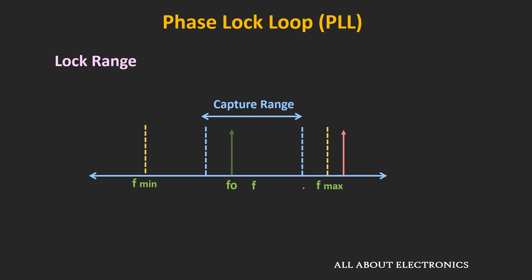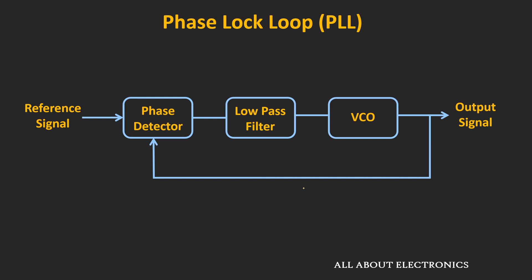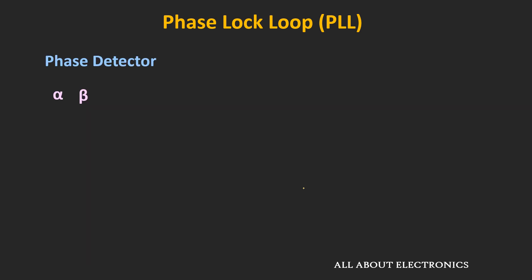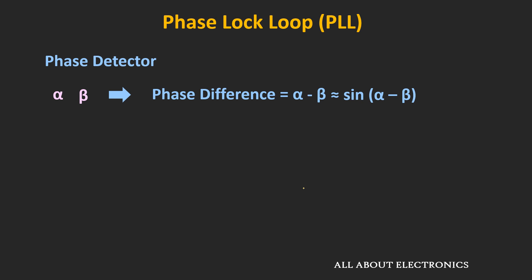These two are important specifications of the phase locked loop. The phase locked loop contains three blocks: the phase detector, the low-pass filter, and the VCO. In this video, let's see in general how the phase detector circuit works and how it identifies the phase difference between two signals. Let's say at a given point in time, one signal has phase α and another signal has phase β. The phase difference between the two signals is α−β. If the phase difference is very small, then sin(α−β) is approximately equal to α−β.